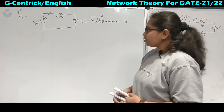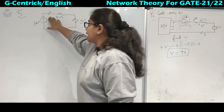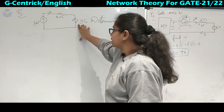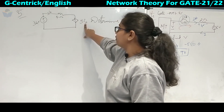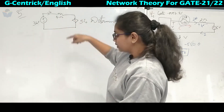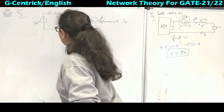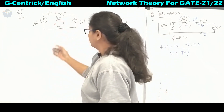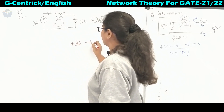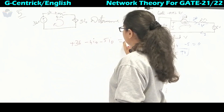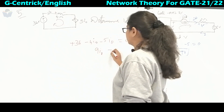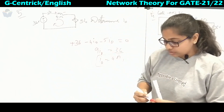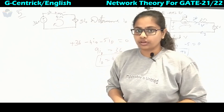The fifth problem asks us to determine I₀. There is a dependent voltage source — a current-dependent voltage source — depending on I₀. Given the direction of I₀, we apply KVL: plus 36 minus 4I₀ minus 5I₀ equals zero. So 9I₀ = 36 and I₀ = 4 amperes. In the next lecture, we will solve more problems. Thank you.